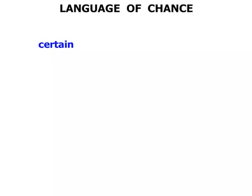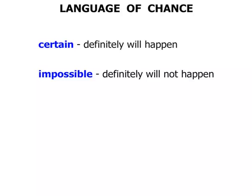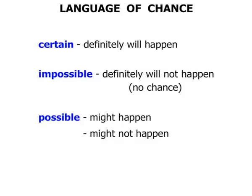We can use the word certain when something definitely will happen. We use the word impossible if something definitely will not happen, and sometimes we say that has got no chance. The word possible is used when something might happen or it might not happen.